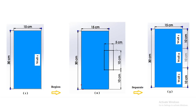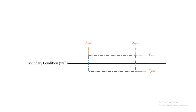You need to show ANSYS Fluent where the boundary condition must be separated. To do so, you need to make a region that has intersections with your wall boundary condition. For the separation, the Y-minimum and Y-maximum coordinates of this region are important to be exact, but the X-minimum and X-maximum just need to be lower and greater than the X coordinate of your right wall boundary condition respectively. With this definition, you can make a region whose inside area will be used for the separation.